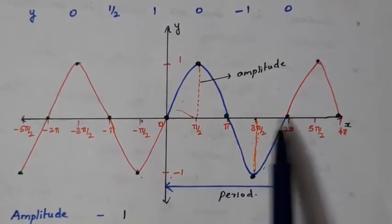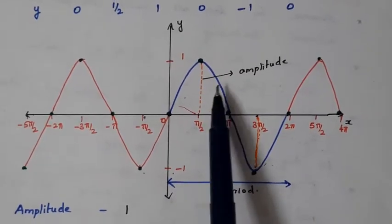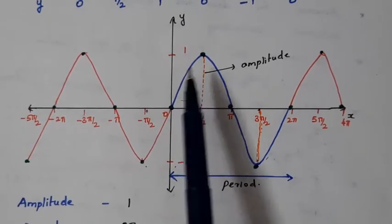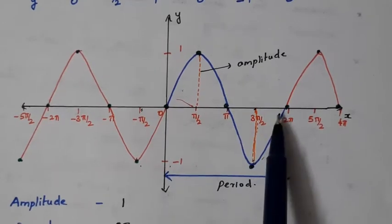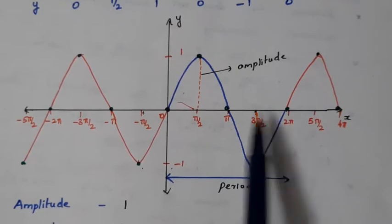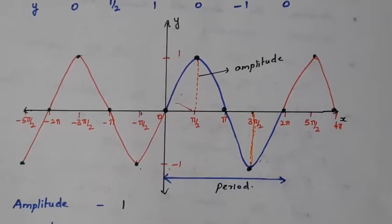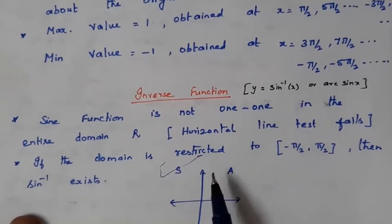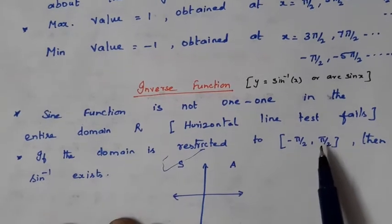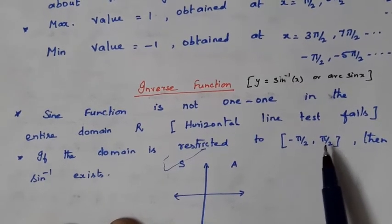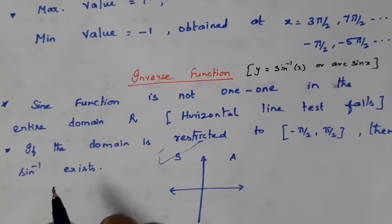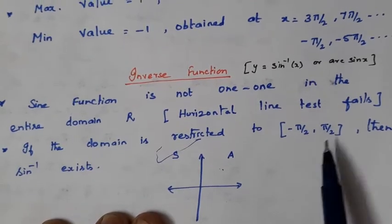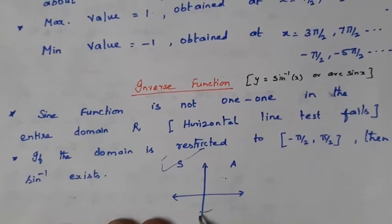To define the inverse function, we need to restrict the domain. If we take the entire 0 to 2π, even in the first and second quadrants the same sine values get repeated, since sine(π − x) = sine x. So we cannot take the entire complete rotation as the restricted domain. We need to restrict the domain to only the closed interval from −π/2 to π/2, covering angles in the first and fourth quadrants.